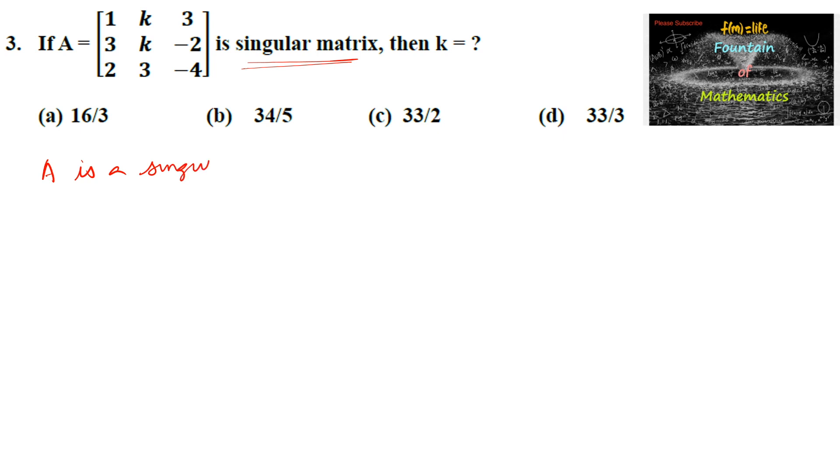A matrix is said to be singular if determinant is 0. If determinant of matrix A is 0, since it is given as a singular matrix, we can